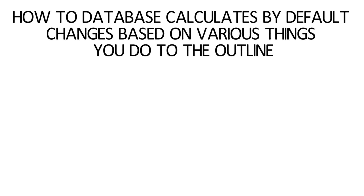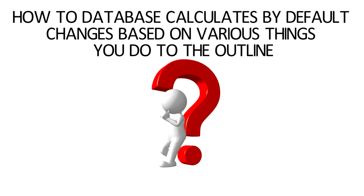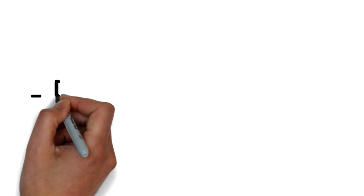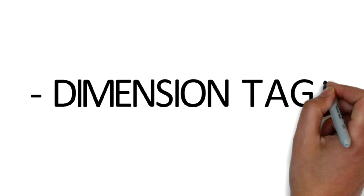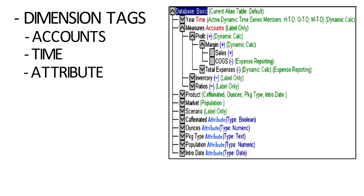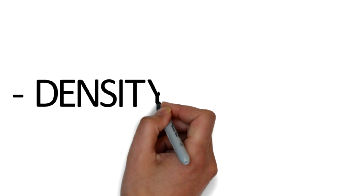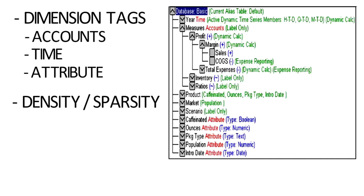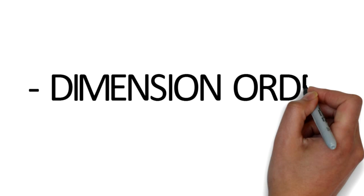How the database calculates by default changes based on various things you do to the outline. The number one thing that affects it is what dimensions you tag. Any dimension tagged as Accounts is going to by default calculate first. Any dimension tagged as Time is going to by default calculate second. Any dimensions tagged with Attribute are going to calculate dynamically, basically at the time you retrieve them. The next thing that affects calculation order is density and sparsity — dense dimensions calculate before sparse dimensions. Third is the order the dimensions are in, and then any members flagged as two-pass if they are stored members.